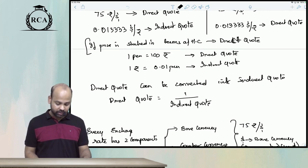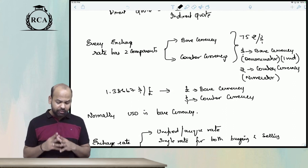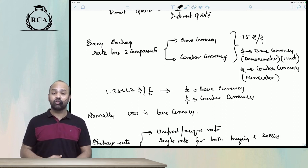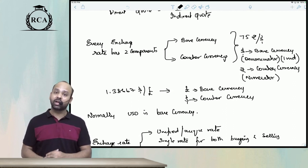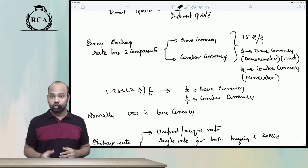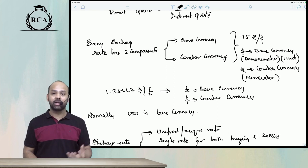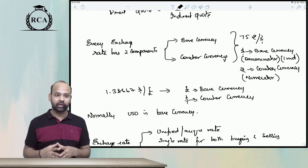Every exchange rate has two components: one is called the base currency and the other is called the counter currency. The base currency is like the commodity — whatever appears in the denominator is the base currency, and whatever appears in the numerator is the counter currency, also called the price currency.